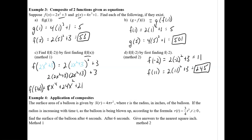Now using that composed function, f of f of negative 2 is 8 times negative 2 to the fourth, plus 24 times negative 2 squared, plus 21. That's 8 times 16 plus 24 times 4 plus 21, which equals 245 — the same answer as method 2.